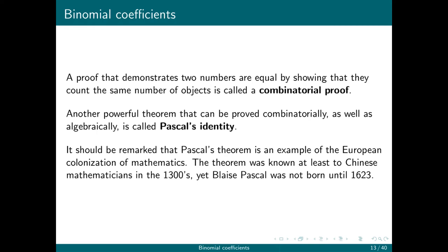A proof that demonstrates two numbers are equal by showing that they both count the same number of objects is called a combinatorial proof. Another important theorem that can be shown combinatorially, as well as a couple of other ways, is called Pascal's identity.